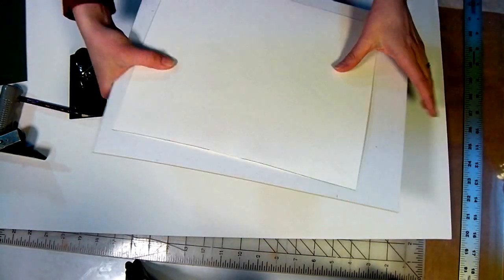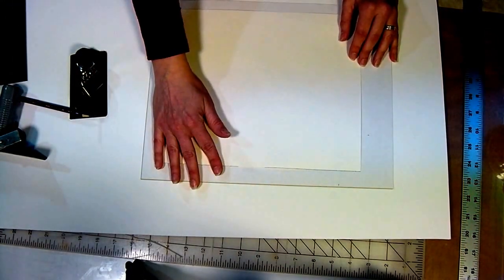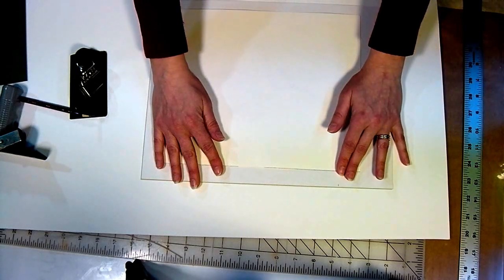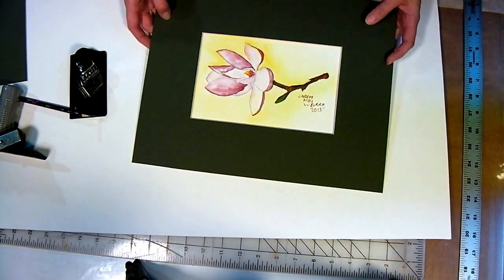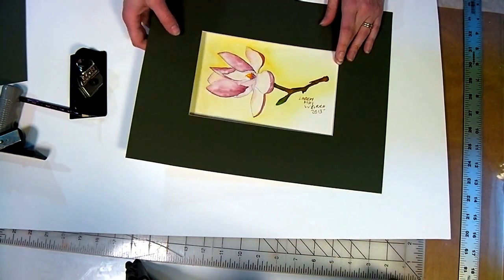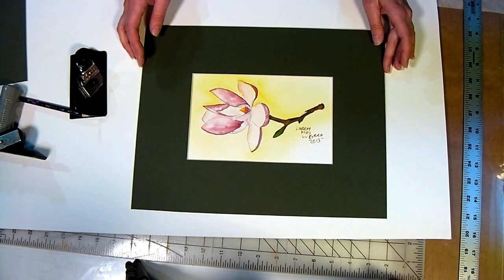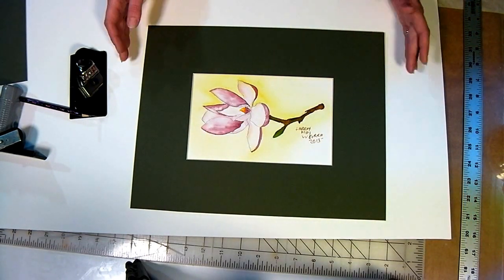And then to secure it to the back, I would simply just use some acid-free fabric tape and that is removable, so that way if say you've made a painting and you've sold it and the person wants to change it out, they can easily remove the adhesive and frame it the way that they want to. But this is a great way to be able to inexpensively mat your artwork or photographs that can fit in regular frames.